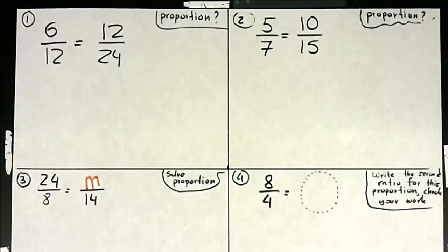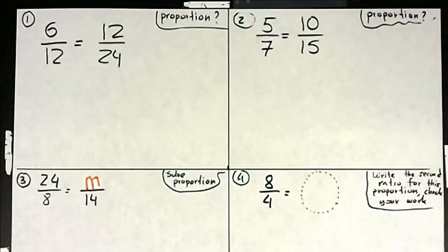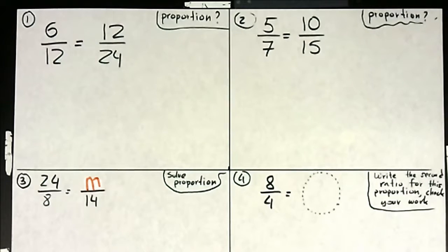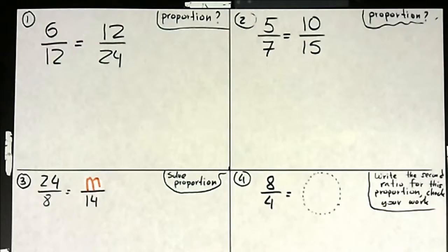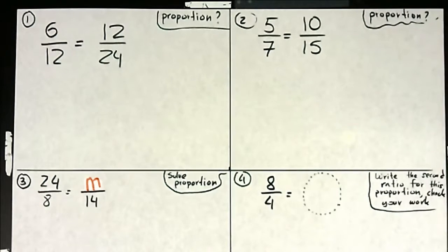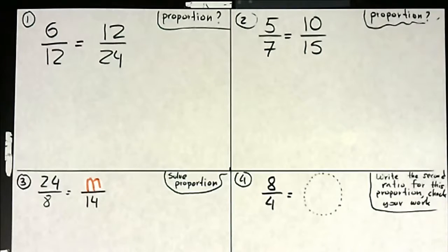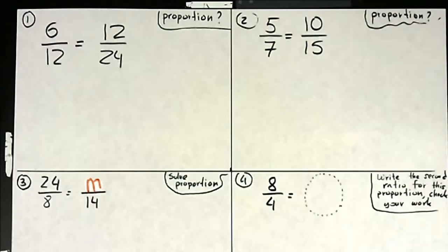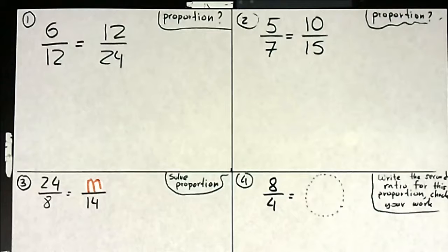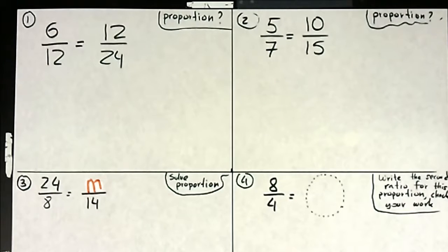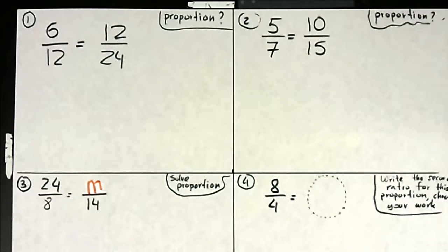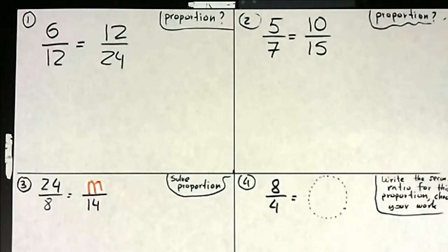In this video we're going to go over the questions from the worksheet for section 5.3. There are seven questions, so let's get started with number one on the top left. The question asks: is this a proportion? How would you go about finding out if this is a proportion or not?